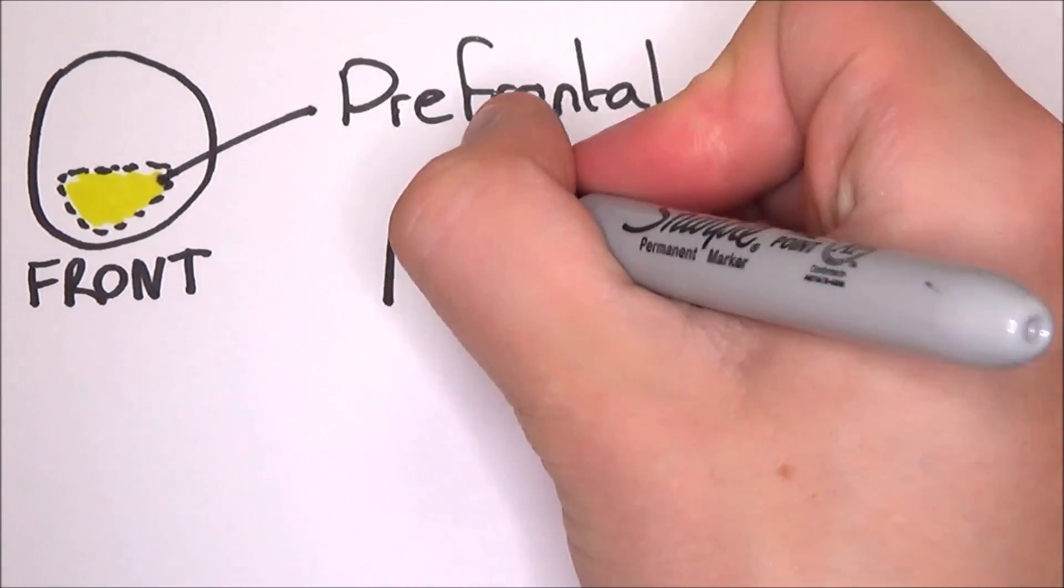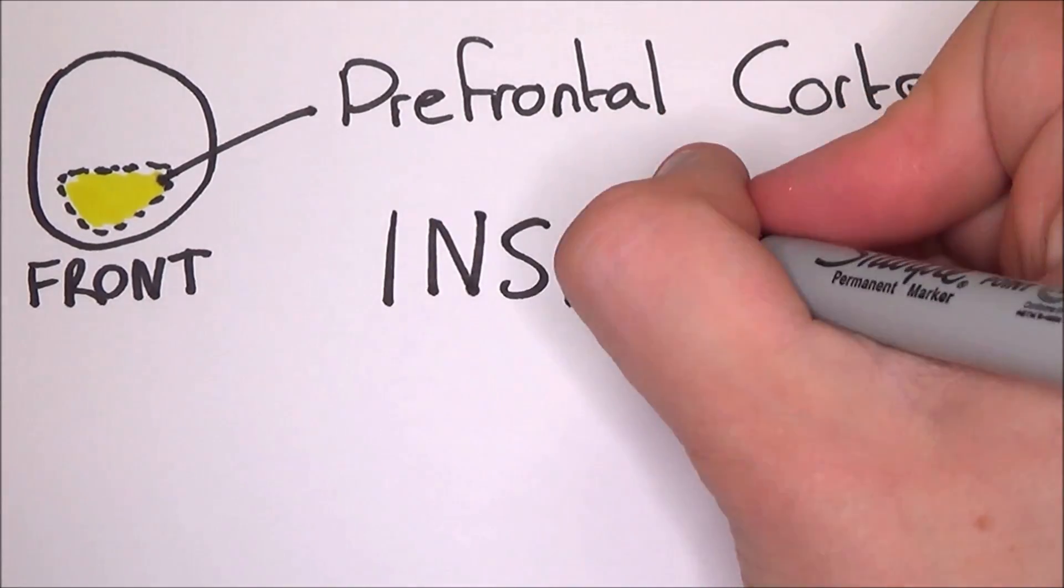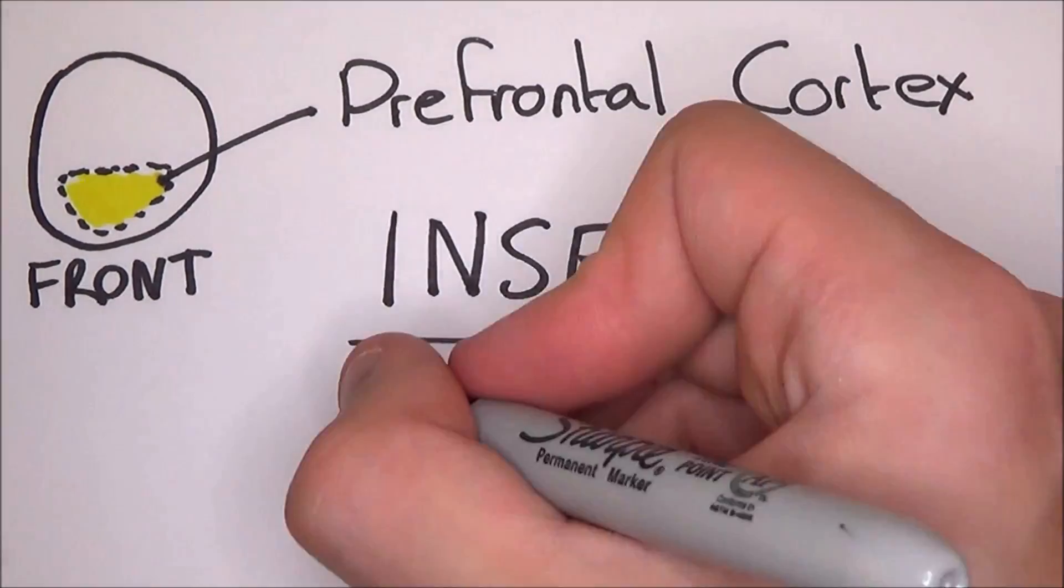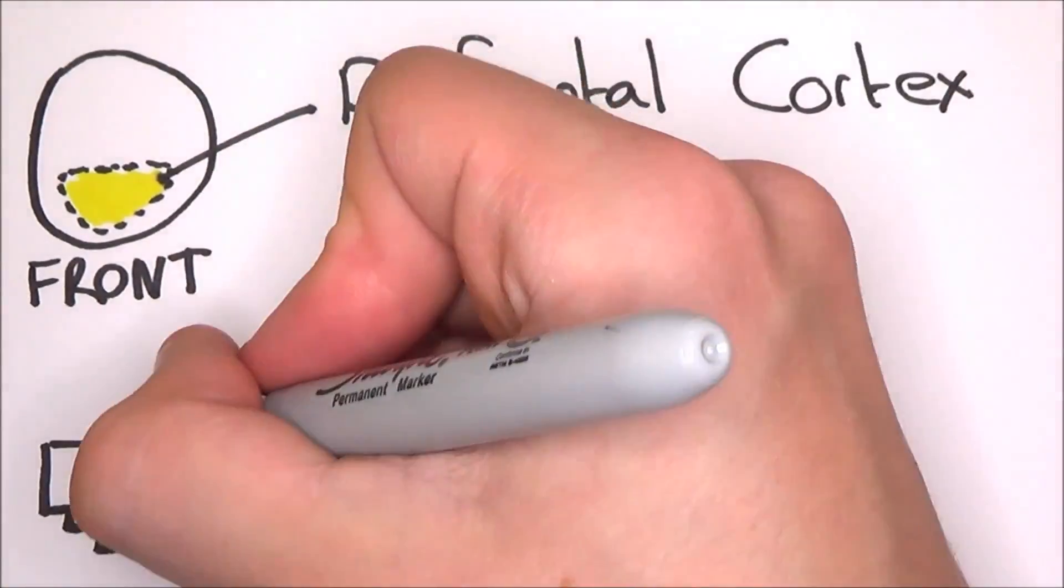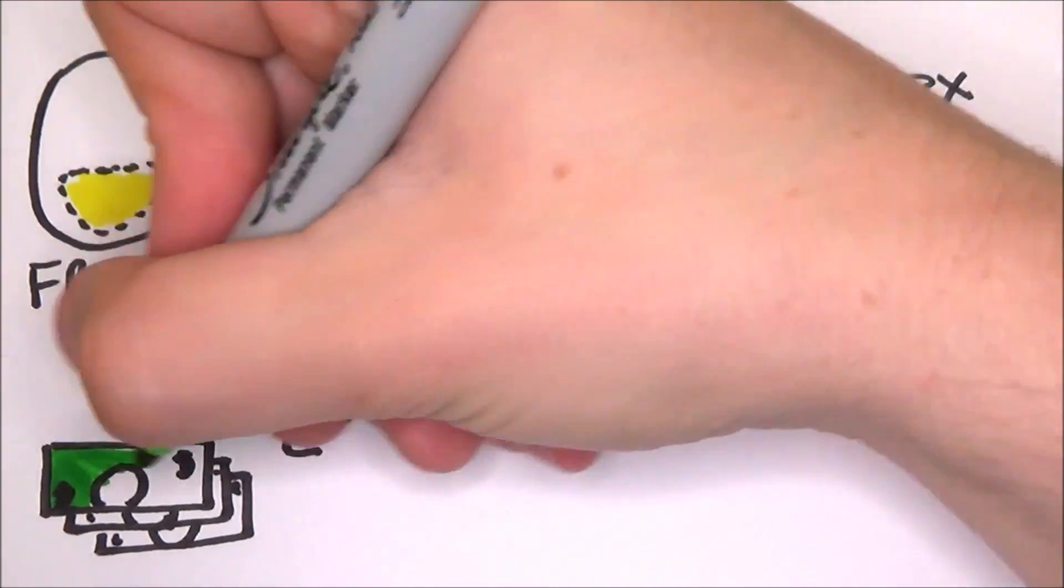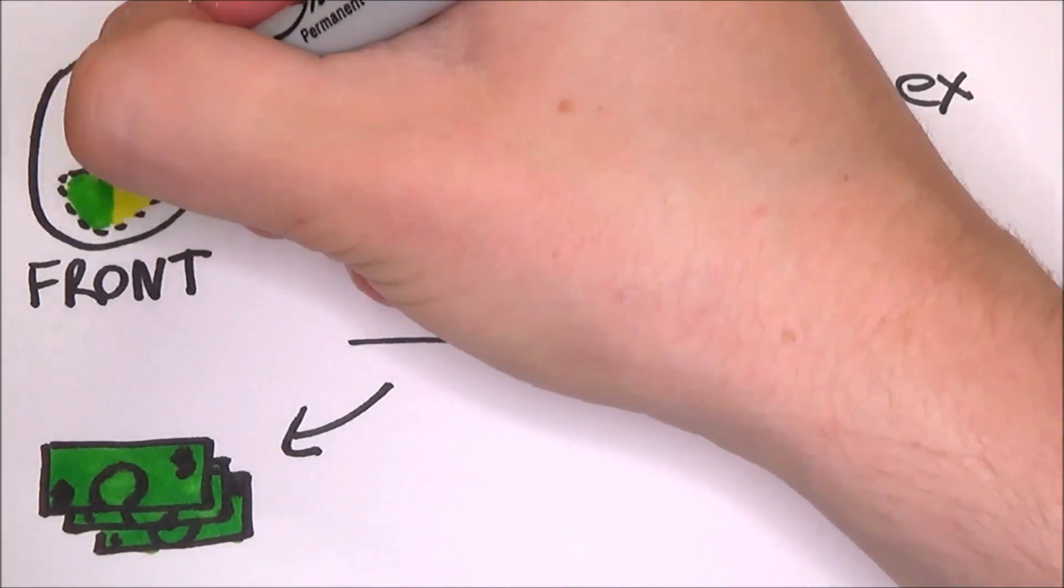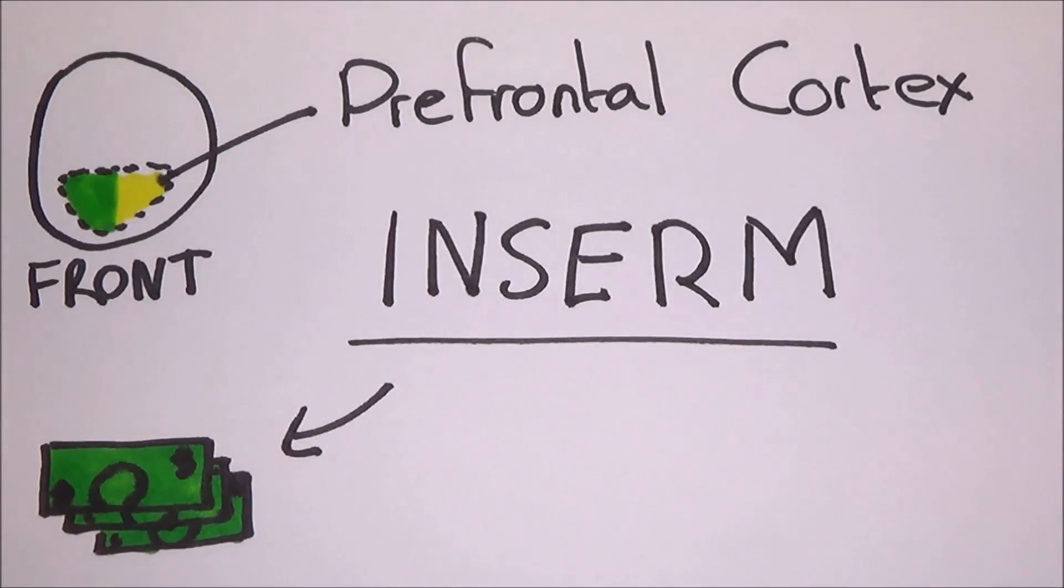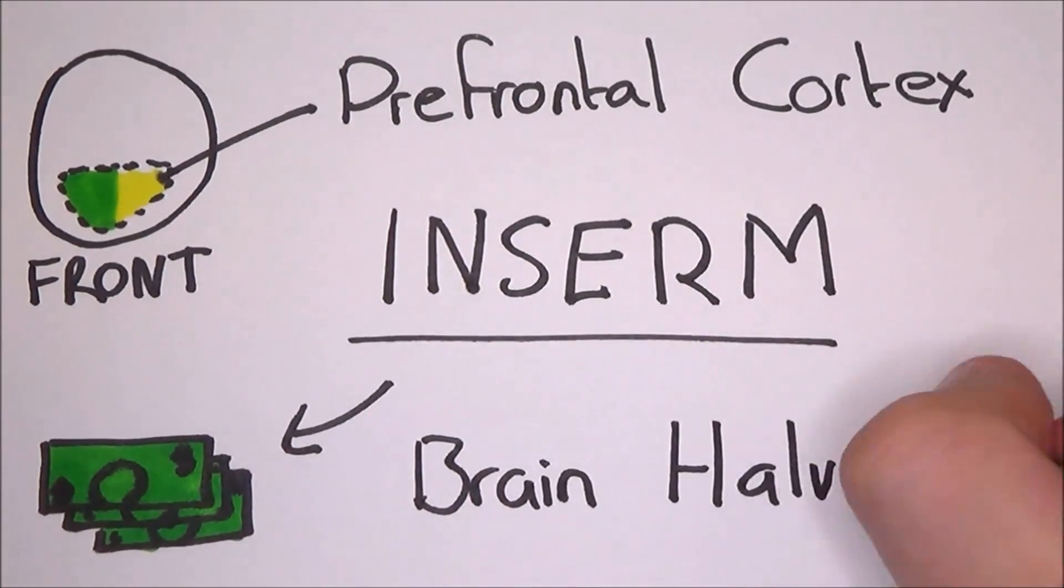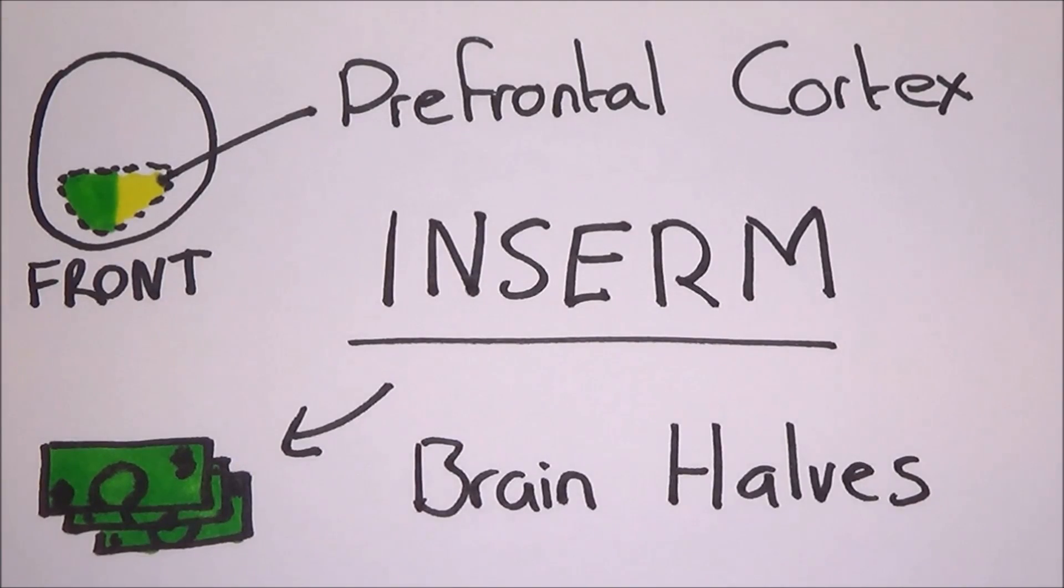As my French is frankly terrible, I will use the acronym for the Paris University, INSERM. Basically, they did an experiment with people under an fMRI scan. They found that offering a larger reward for completing one of the two tasks accurately, only one side of the prefrontal cortex actually increased its activity. It was the same for either side.